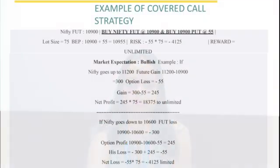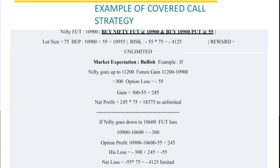Let us see how the example plays out. Suppose Nifty runs up to 11,200 in the coming days. The future gain is 300 points because we bought Nifty at 10,900, and the option loss would be 55 — the premium we invested. So the net gain is 300 minus 55, which is 245 points. The net profit is 18,375 rupees in the scenario when Nifty goes up to 11,200.